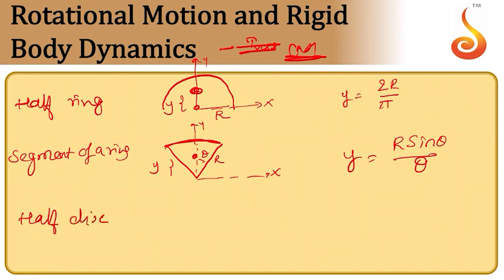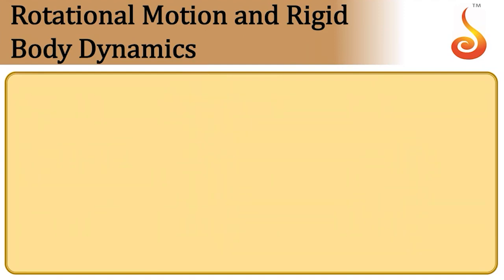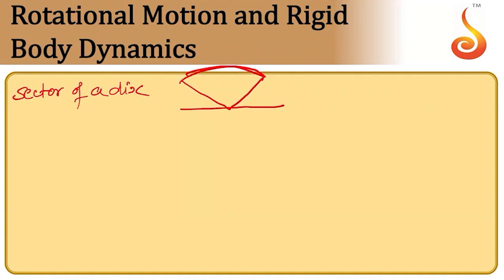For a half disc of radius r, the center of mass is at a height y given by 4r/(3π). For a sector of a disc — a symmetric one — with half-angle θ, the center of mass is at height y_c given by 2r·sinθ/(3θ). I urge you to remember these values.